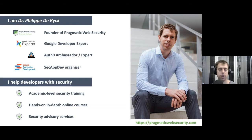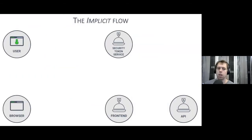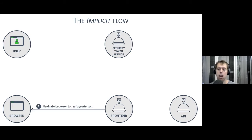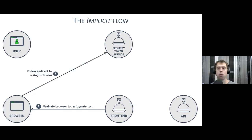Let's talk about front-end applications and OAuth and OIDC. Remember that one arrow where the front end was trying to get tokens from the security token service? It's not that simple. Let's start with the traditional flow: the implicit flow. In the implicit flow, the front end relies on the browser to navigate to the security token service, with parameters in the URL telling the STS what token it wants.